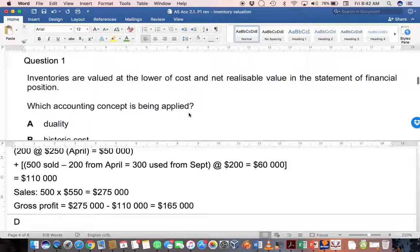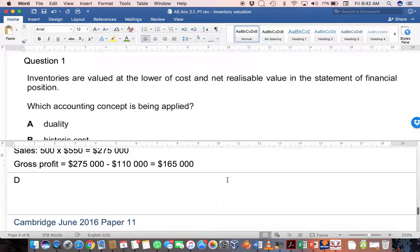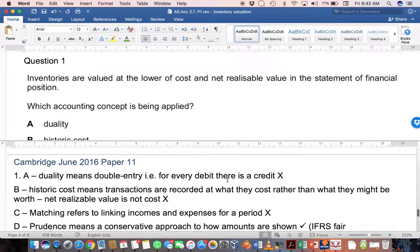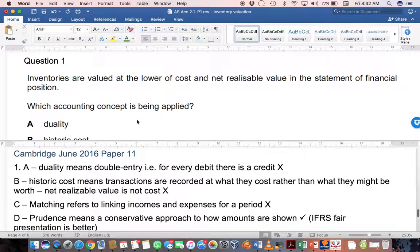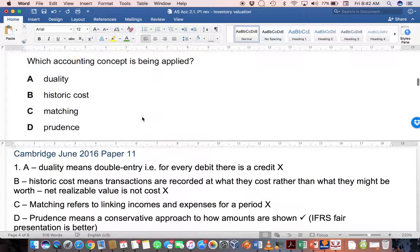Cambridge June 2016 paper 11, Question 1. Inventories are valued at the lower of cost and net realizable value in the statement of financial position. Which accounting concept is being applied? Let's look at each in turn. A - Duality. Duality means your double entry system. In other words, for every debit there is a credit. This is not what we're referring to here. Let's move on.